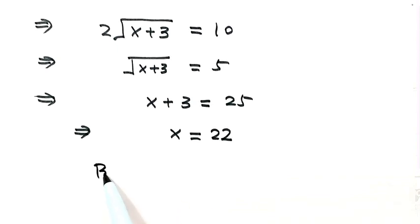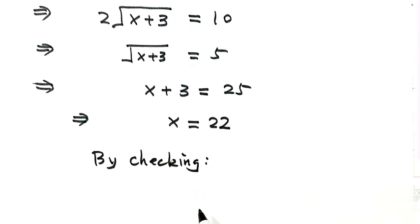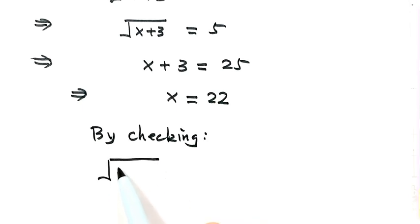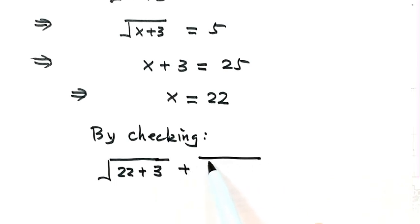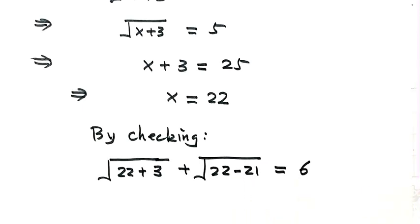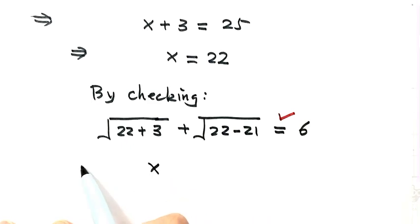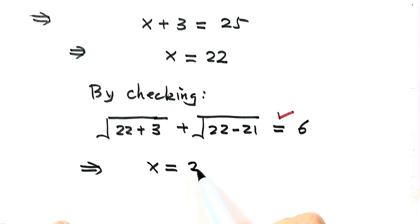By checking — plugging x equals 22 into the original equation — we get: square root of 22 plus 3, plus square root of 22 minus 21, equals 6. This is true. So x equals 22 is indeed the solution of the equation.